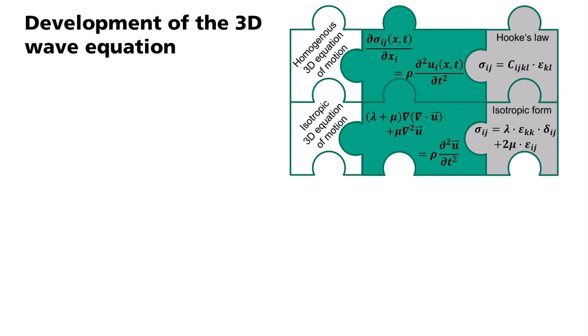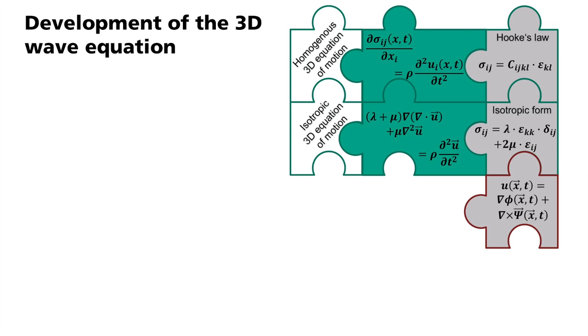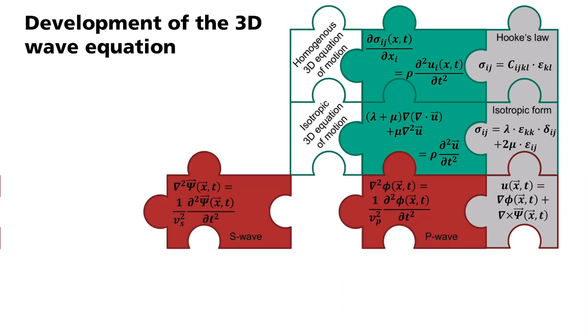We solve this equation by separating the displacement field u into a scalar potential phi and a vector potential psi. Even if this appears complex at first glance, this separation leads to two simple solutions for the equation of motion. The seismic wave equations for P and S waves, in 3D of course.